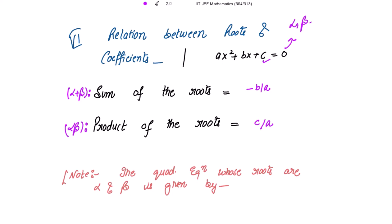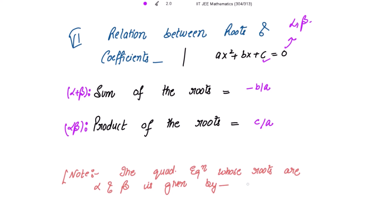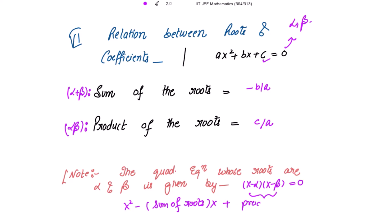Please note that to find the quadratic equation whose roots are α and β, simply expand (x − α)(x − β) = 0. This gives x² − (sum of roots)·x + (product of roots) = 0. Just substitute the sum of the roots and the product of the roots to obtain the quadratic equation when the roots are given.